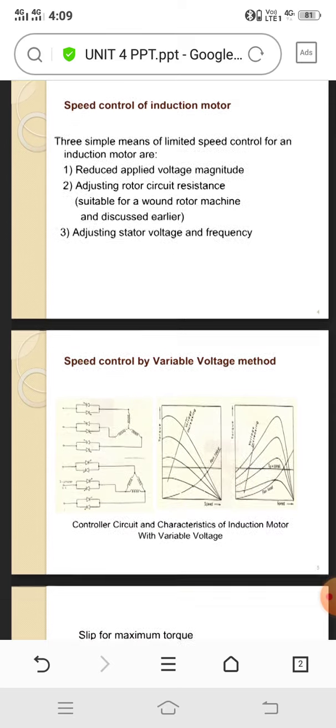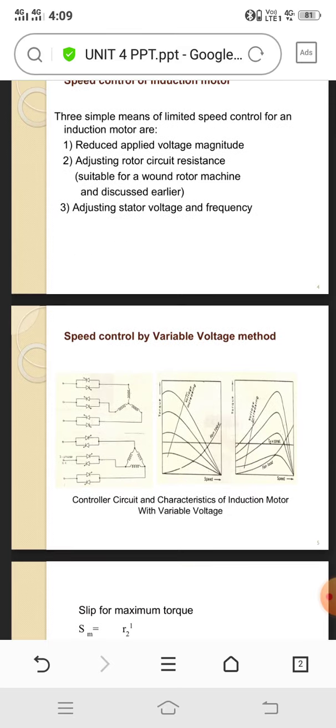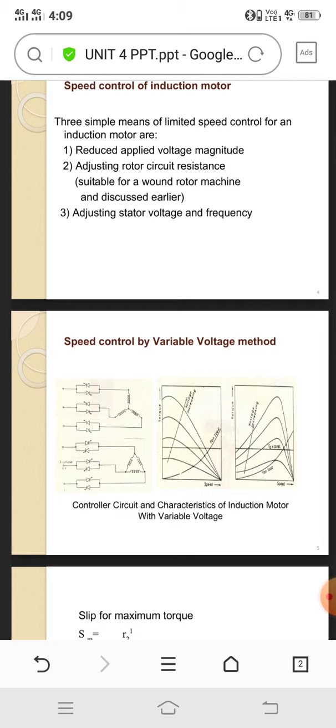First, we have to see the speed control by variable voltage method. If you apply the voltage by varying time to time across that motor, the motor output may vary by the applying input.